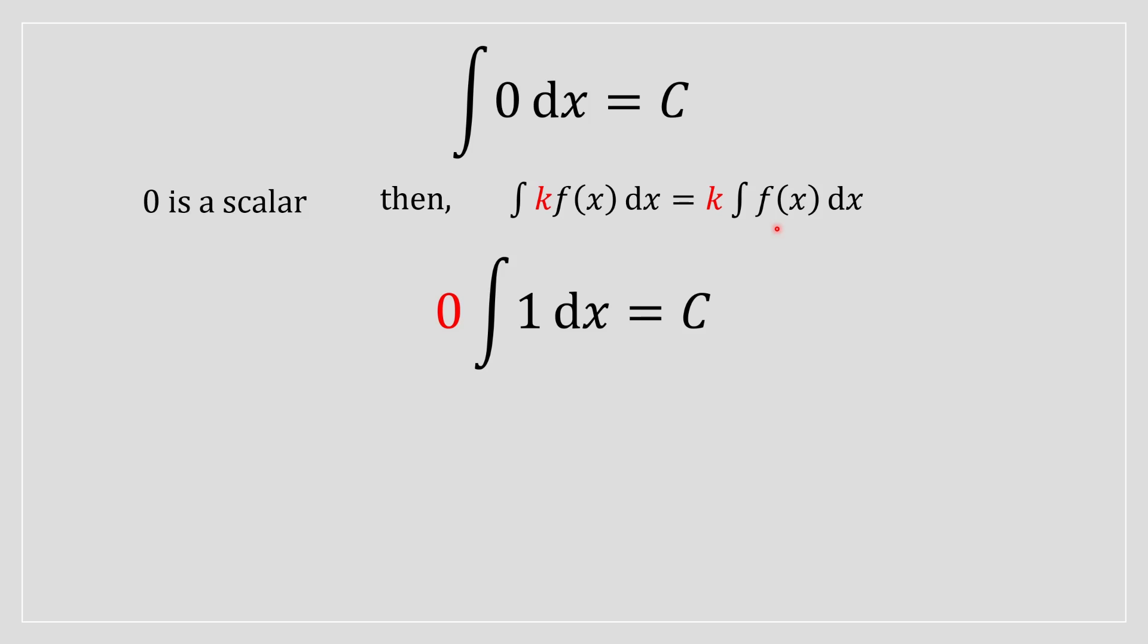we can establish that zero is basically, it could be multiplied with the integral of 1dx and when you take the derivative of 1dx, that will give you zero times x plus c.